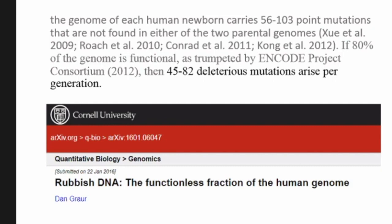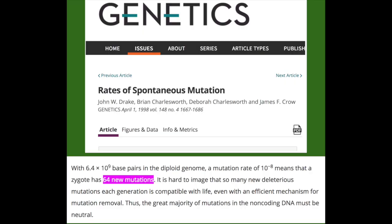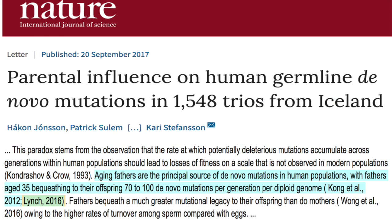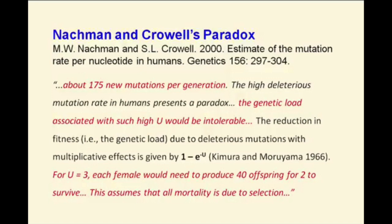If 80% of the genome is functional, as trumped by the ENCODE Project Consortium of 2012, then 45 to 82 deleterious mutations arise per generation. Now, let's look at experiments to see if that is the case worldwide. What do we see? Well, no matter where we look, the accumulation of harmful mutations are building up and up and up, and nothing can stop the process.